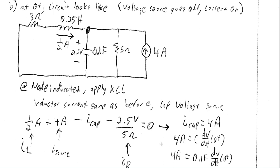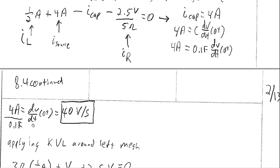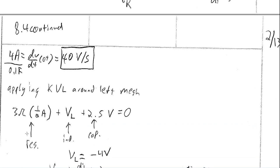We know for a capacitor that I = C·dV/dt. With 4 amps through the capacitor and C = 0.1 farads, we get dV/dt at zero plus equals 4 ÷ 0.1 = 40 volts per second. Dividing amps by farads gives volts per second.